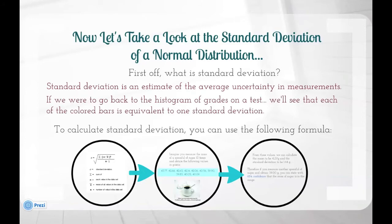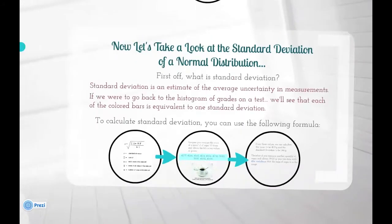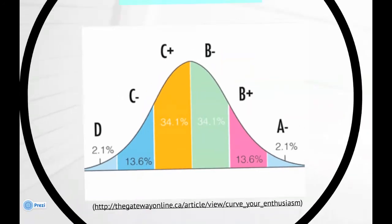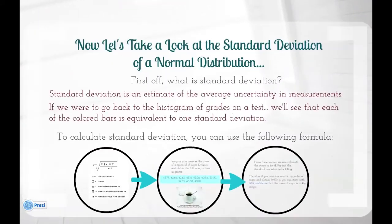If we were to go back to the histogram of grades on the test, we'll see that each of the colored bars is equivalent to one standard deviation. To calculate standard deviation, you can use the following formula.